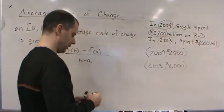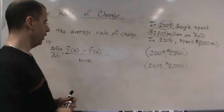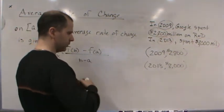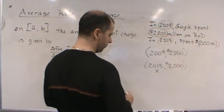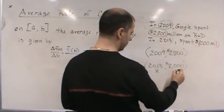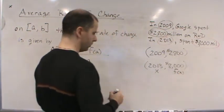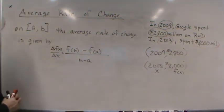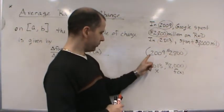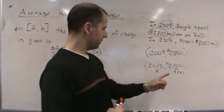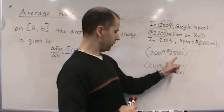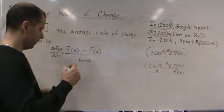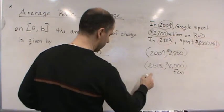These are in millions. The years are the x values, and the money spent are the f(x) values. The interval goes from 2009 to 2013, and these are the function values, the money spent for those two years.